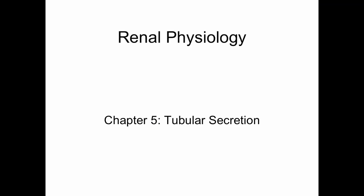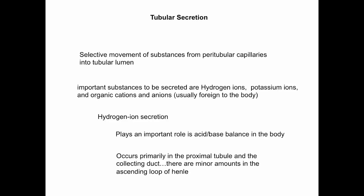We talked about tubular reabsorption, so we're going through the basic processes of urine formation. The next step in production of urine is tubular secretion. Tubular secretion is the movement of substances from the peritubular capillaries into the tubular lumen — an opportunity to add things that were not originally filtered to the contents of urine. We secrete a variety of things.